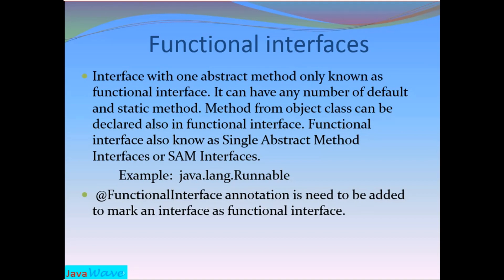Inside a functional interface, methods from the Object class can also be declared. A functional interface is also known as a single abstract method interface, or SAM interface. An example is java.lang.Runnable, which was rewritten in Java 8 as a functional interface.